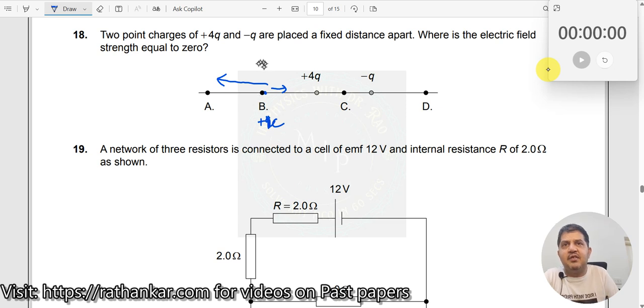So this is not zero. Net force is not zero, and we know that F is equal to Q times E. So therefore, if force is not zero, E is also not zero.